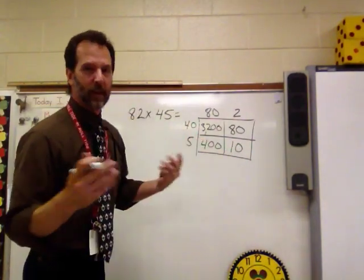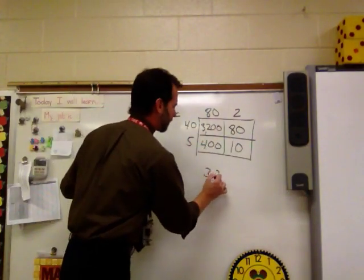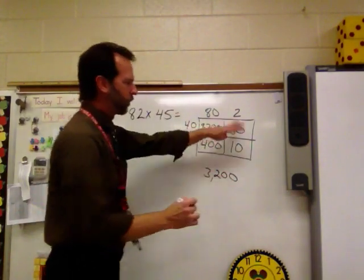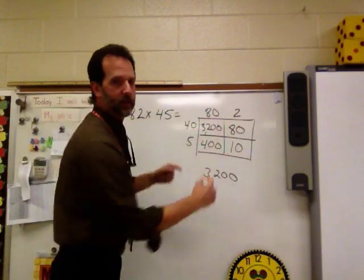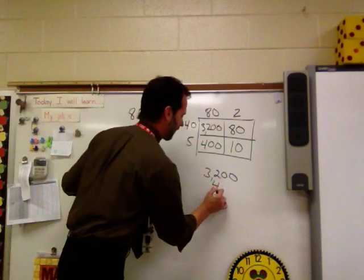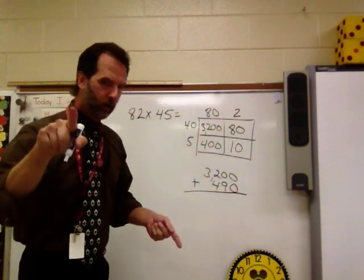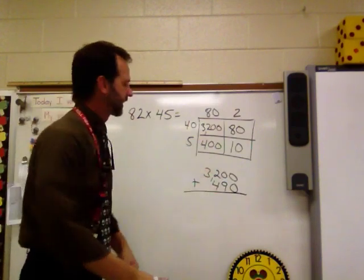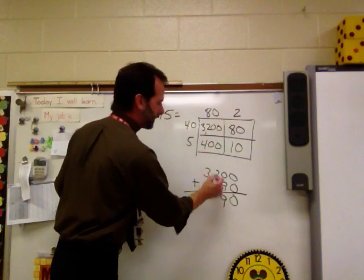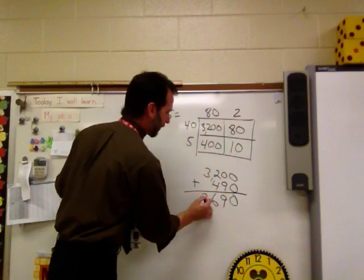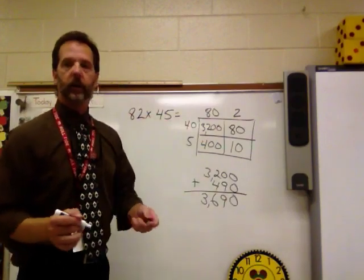Now we can go ahead and add these numbers. We can take a shortcut if we want to. So let's take one. I'm going to write 3,200. Now watch what we can do with these numbers. 80 plus 10 is 90, and then 400 plus 90 is 490. So if you can take a shortcut and do it correctly, go ahead. If not, write the numbers down. 0, 9 and 0 is 9, 2 and 4 is 6 and 3. And 82 times 45 would be 3,690.